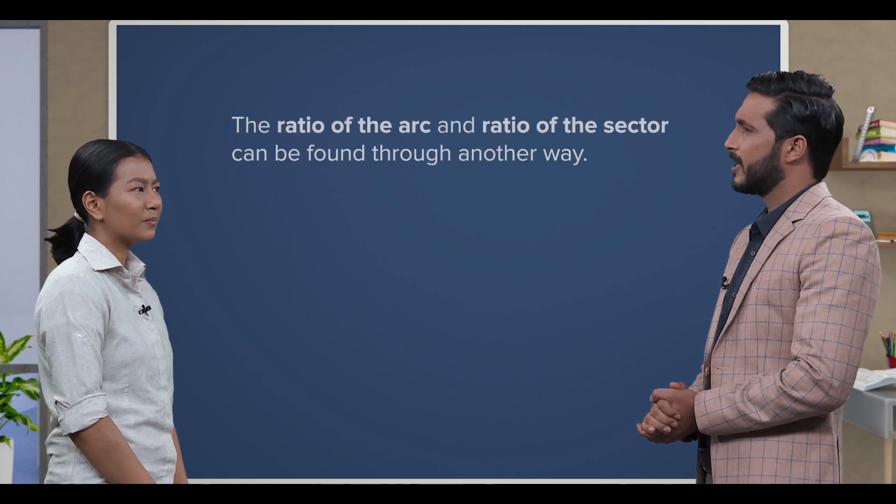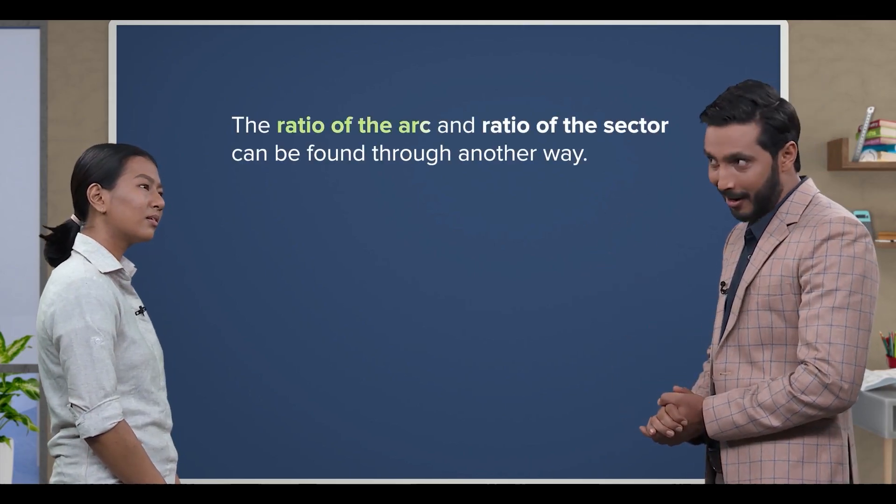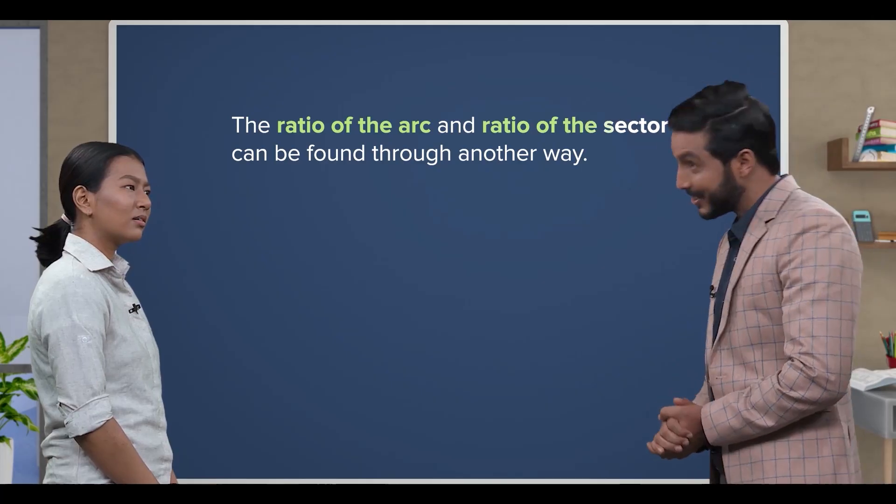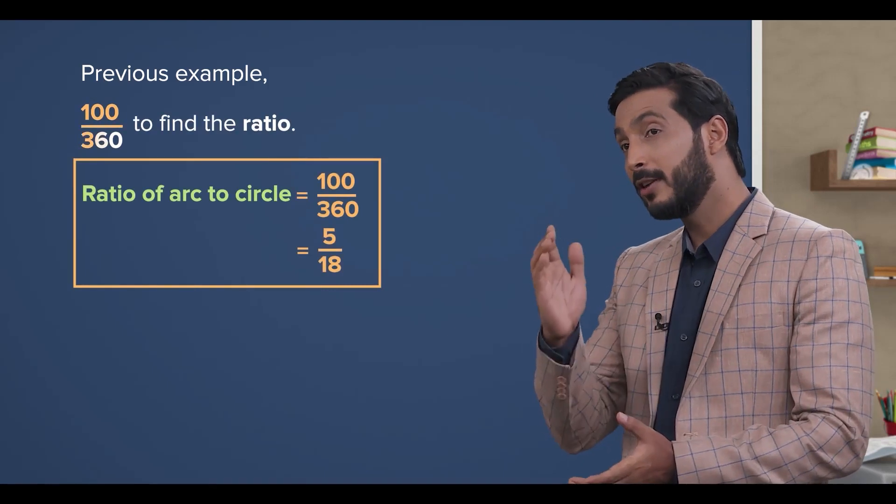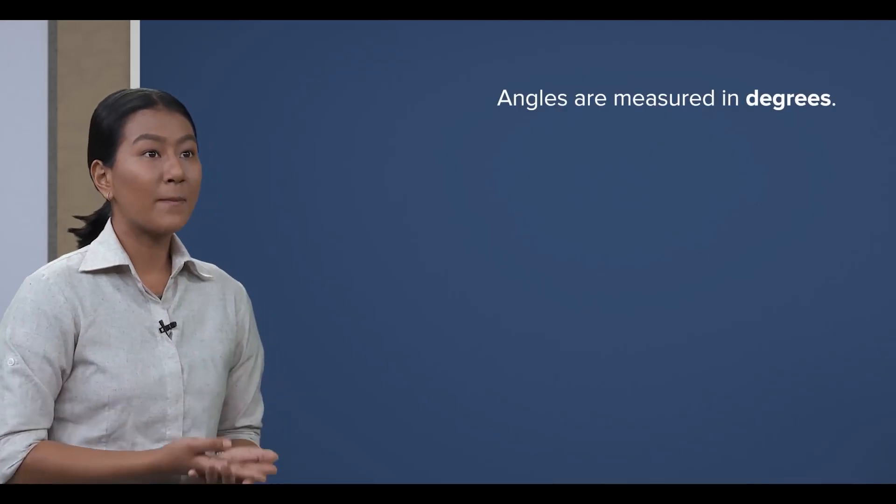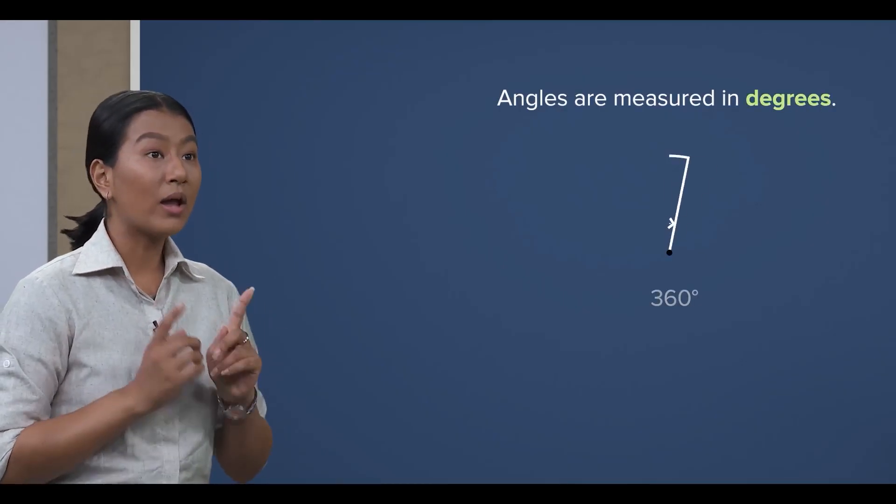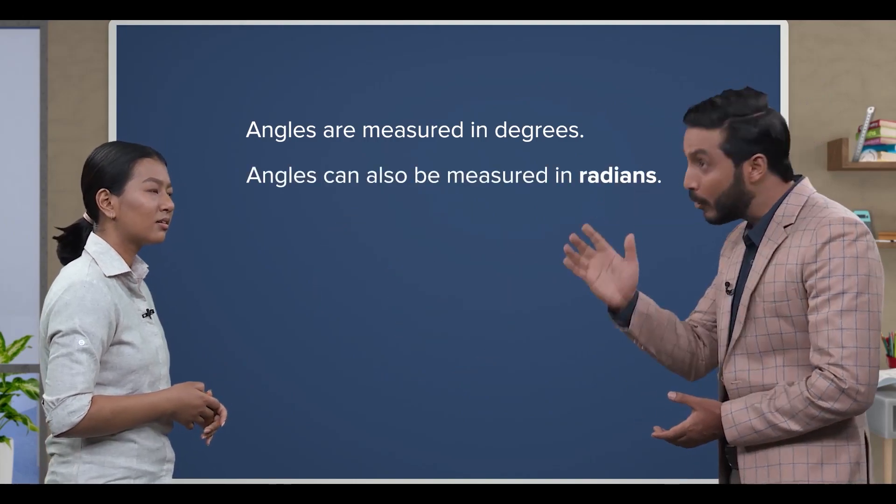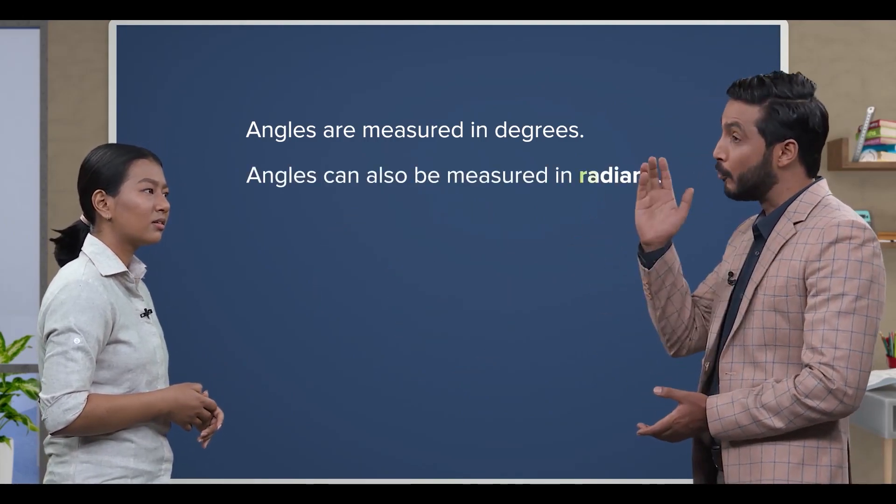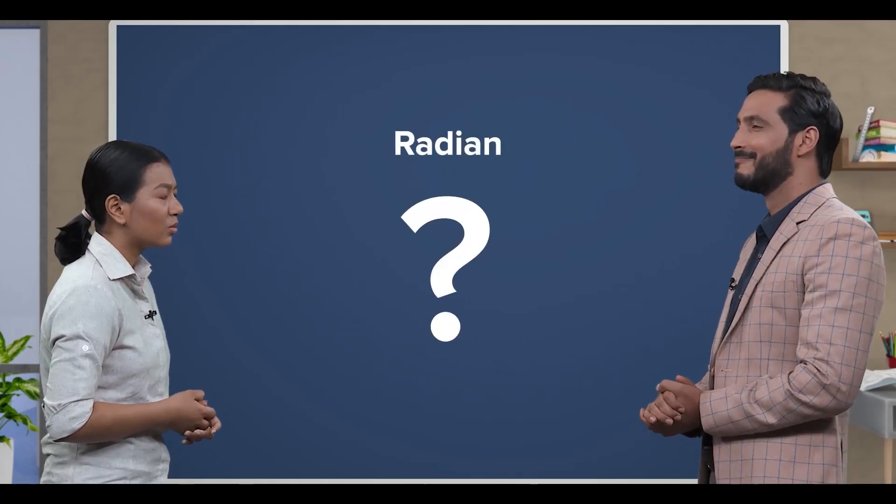Very good, that's correct. Now, would it shock you if I told you that there's another way to find the ratio of the arc and ratio of the sector? What do you mean? Well, in the previous example, you used 100 over 360 to find the ratio, right? Yes, because angles are measured in degrees and one full circle is 360 degrees. Ah, but angles can also be measured in radians. Radians? What's that?